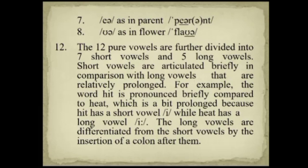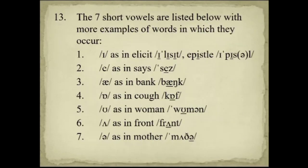The 12 pure vowels are further divided into seven short vowels and five long vowels. Short vowels are articulated briefly in comparison with long vowels that are relatively prolonged. For example, the word 'it' is pronounced briefly compared to 'eat', which is prolonged because 'it' has a short vowel while 'eat' has a long vowel. The long vowels are differentiated from the short vowels by the insertion of a colon after them. Examples: a receipt, a pistol (not a pistol), says, and cough.